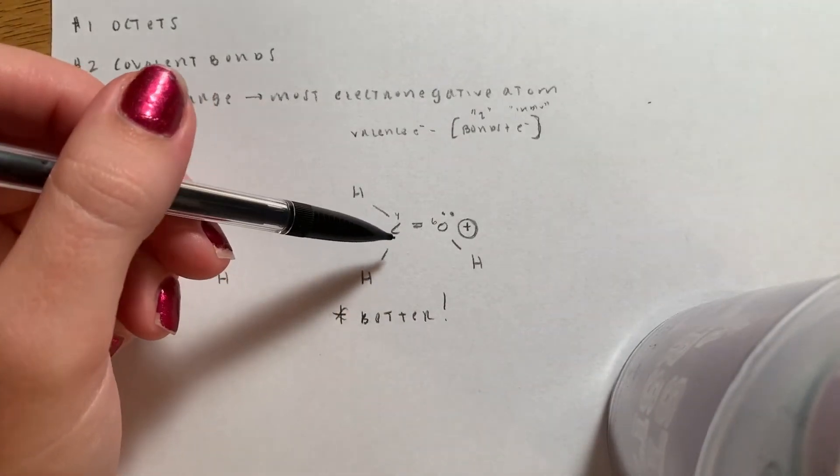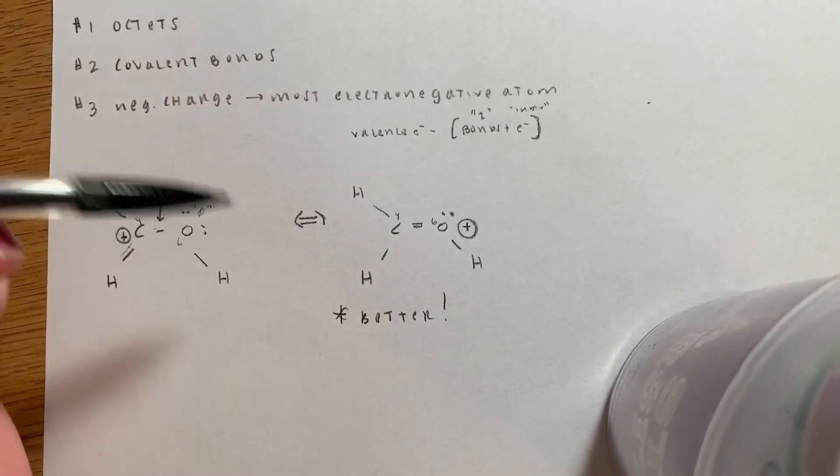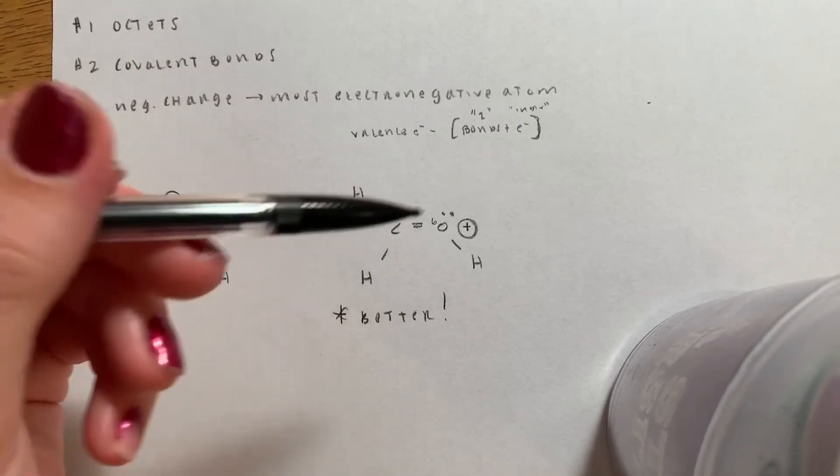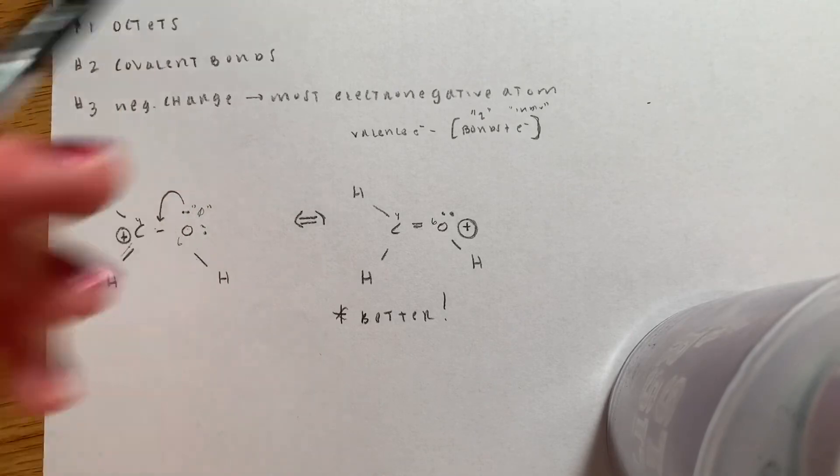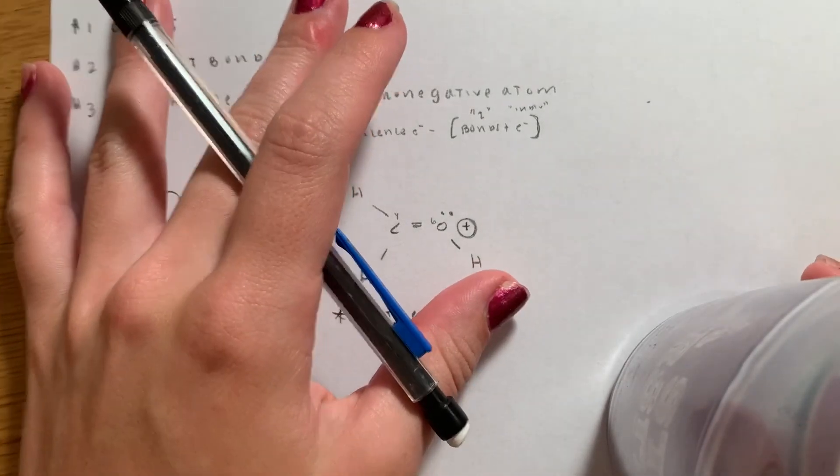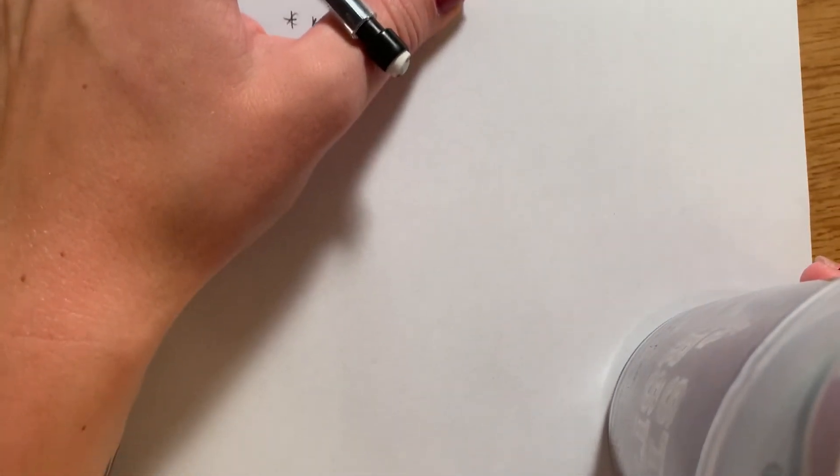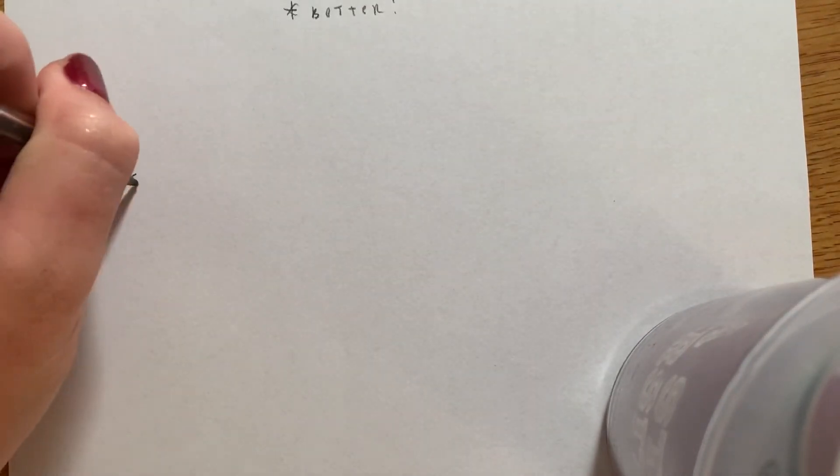If the octets still weren't fulfilled, then we would look at the covalent bonds. But since we didn't get to that point, we're all good. And now we're going to follow another curved arrow diagram and discuss if the molecule is better or worse.